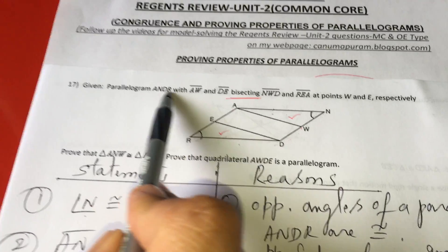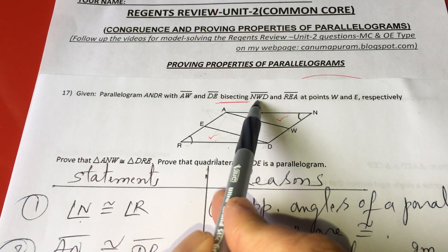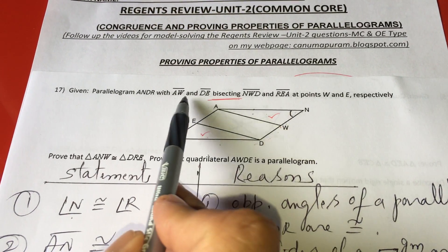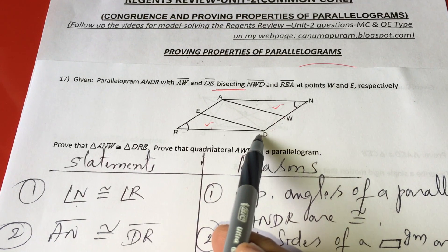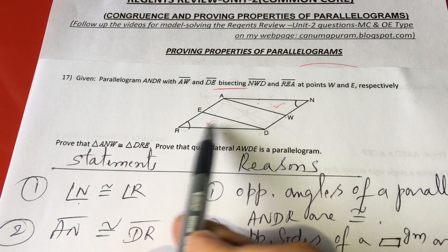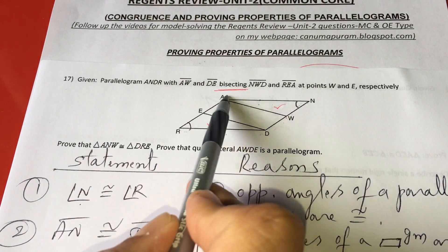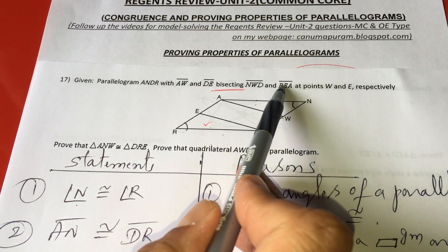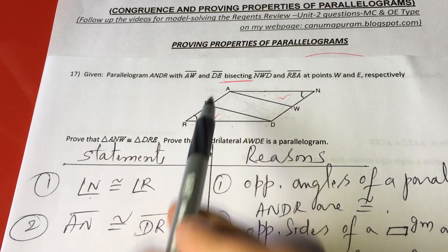Why am I saying these two are midpoints? In the beginning, they have shown us that AW and DR are bisecting NWD and REA. When AW bisects NWD, this will become midpoint. In the same way, when DE bisects AER or REA, this E becomes the midpoint.